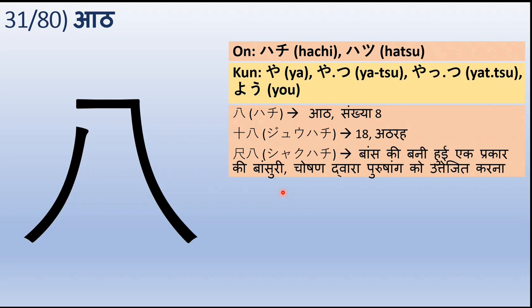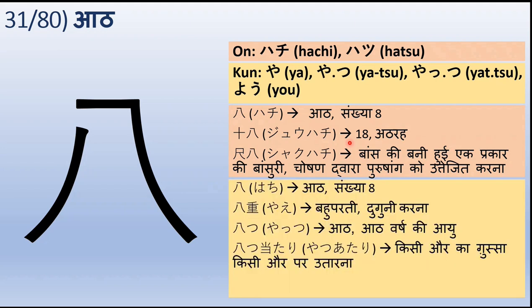Hachi — uske baad ju-hachi yaani aathara. Shaku-hachi yaani baans ki bani hui ek prakar ki bansuri jo Japan mein payi jaati hai. Iska arth ye bhi ho sakta hai ki chosan dwara purushang ko uttejit karna. Kunyomi mein hachi — wahi aath. Yaae ka arth hota hai bahuparat yaani multi-layered, aur duguni karna yaani to double. Uske baad yaatsu yaani aath ya aath varsh ki aayu.